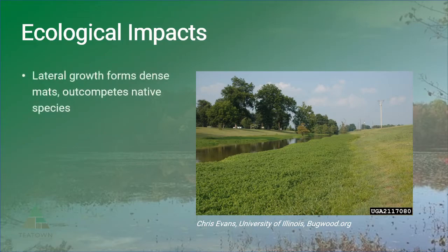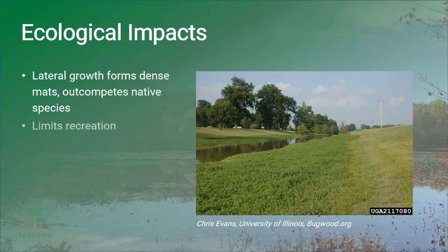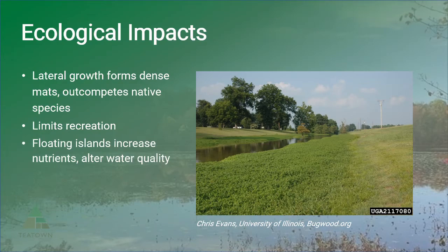While alligator weed is currently confined to warmer regions, this plant may prove to be a major threat to the lower Hudson Valley as a result of a changing climate. Major ecological impacts are most clearly related to its growth habit. Its tendency to spread laterally allows it to form dense mats that take up space available for native species, as well as drastically reduce the ability to enjoy recreational activities. This plant is also able to form island-like masses known as tussocks, which produce an excess of organic detritus and nutrients, impacting water quality. Its ability to grow on cultivated cropland makes it a major threat to agriculture.